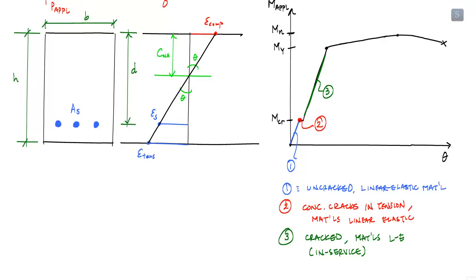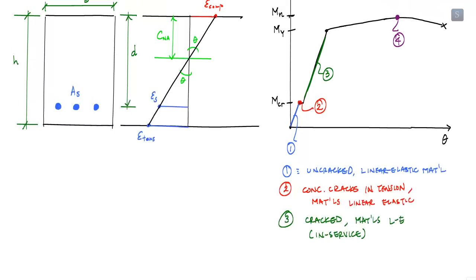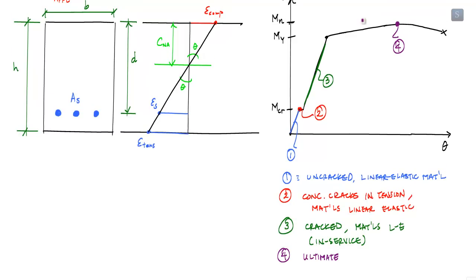Stage four, or ultimate behavior, is associated with the nominal or theoretical moment strength of the beam, where concrete crushes in compression. To do any analysis, each stage needs a mathematical definition based on the strains the concrete and steel are experiencing. With these strain values, we can determine the stress profile, calculate moments from given stresses or strains, or calculate strains and stresses from a known moment value.